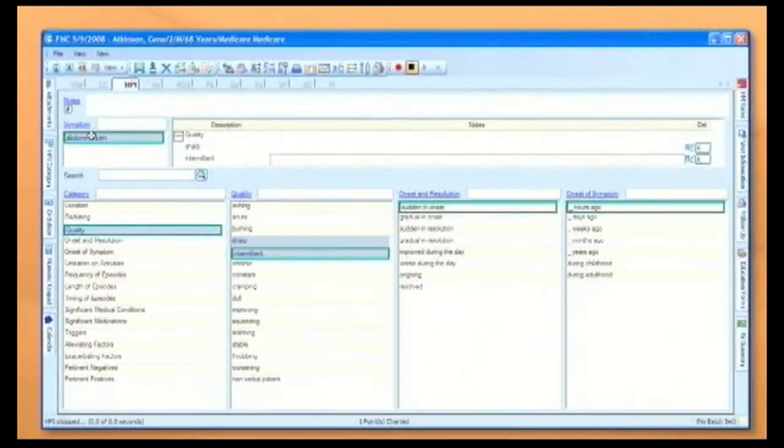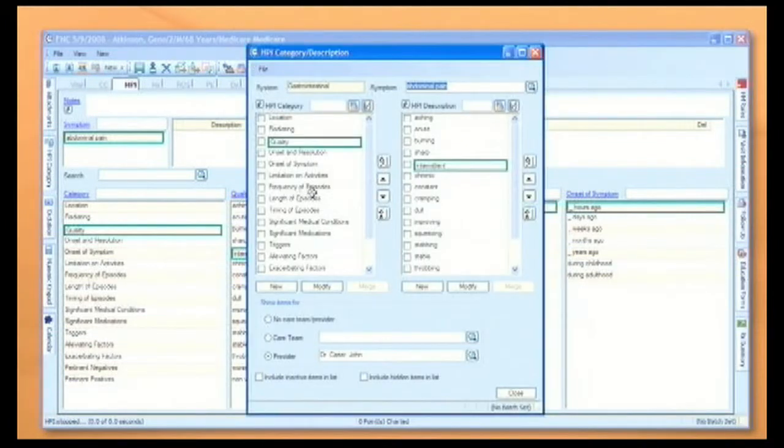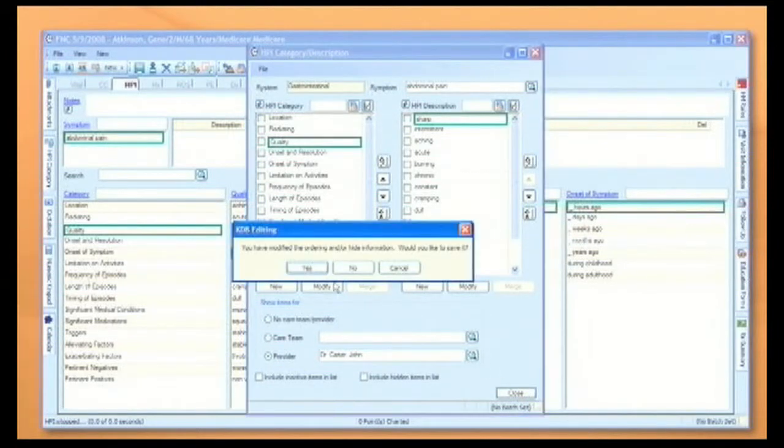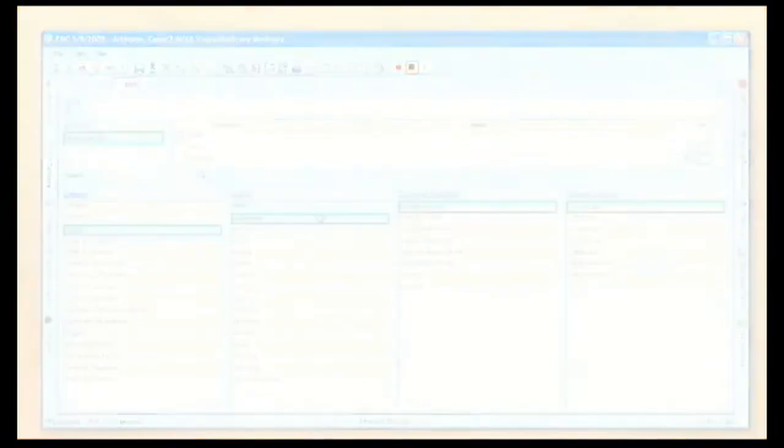When you go into history of present illness, for instance, abdominal pain, you'll see location and quality. If sharp intermittent pain is one of the questions you ask frequently, you can select it here and move it to the top. Now, when you refresh, you'll notice it appears at the top. So, it's easy to use, easy to understand, even when your patient isn't.